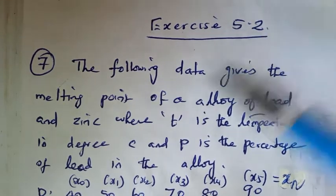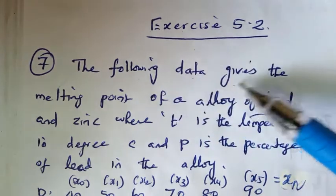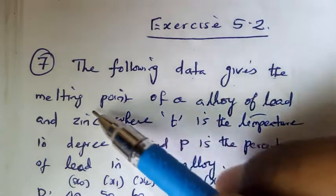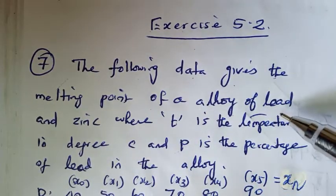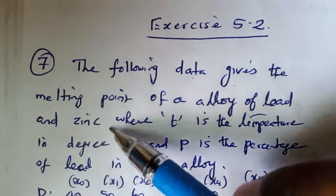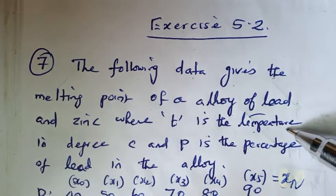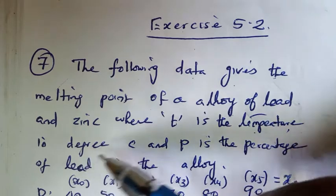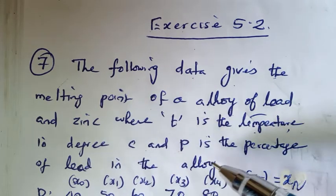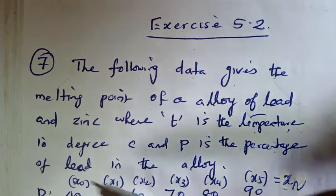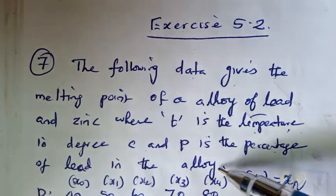Exercise 5.2, problem number 7. The following data gives the melting point of an alloy of lead and zinc, where T is the temperature in degrees Celsius and P is the percentage of lead in the alloy.